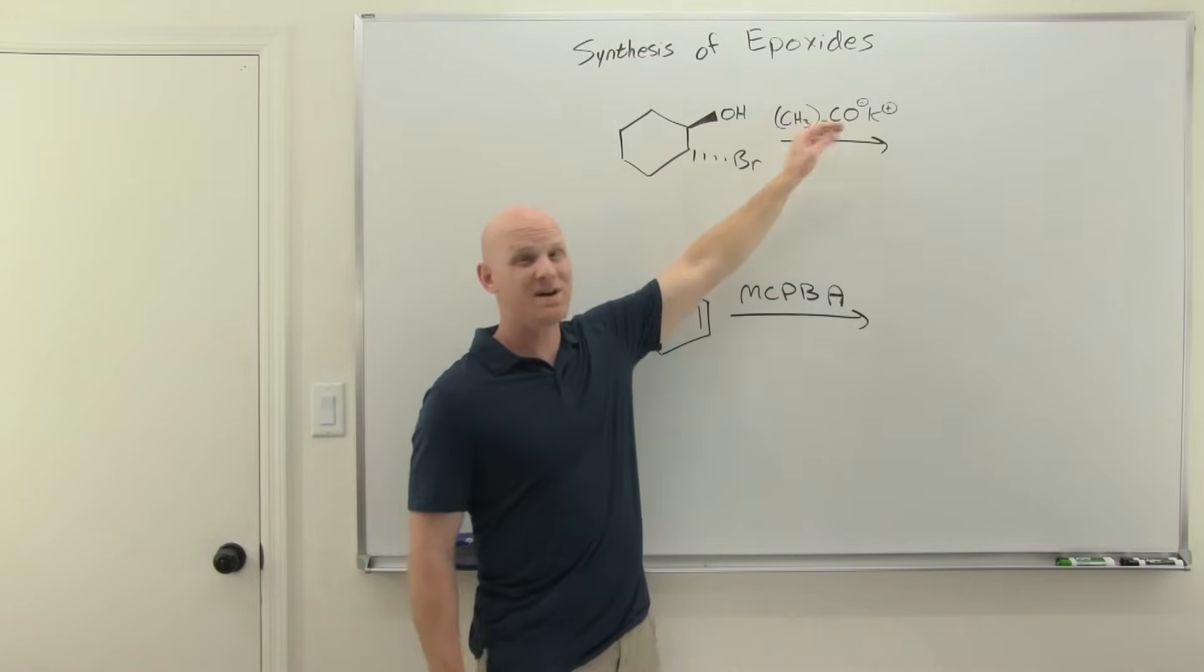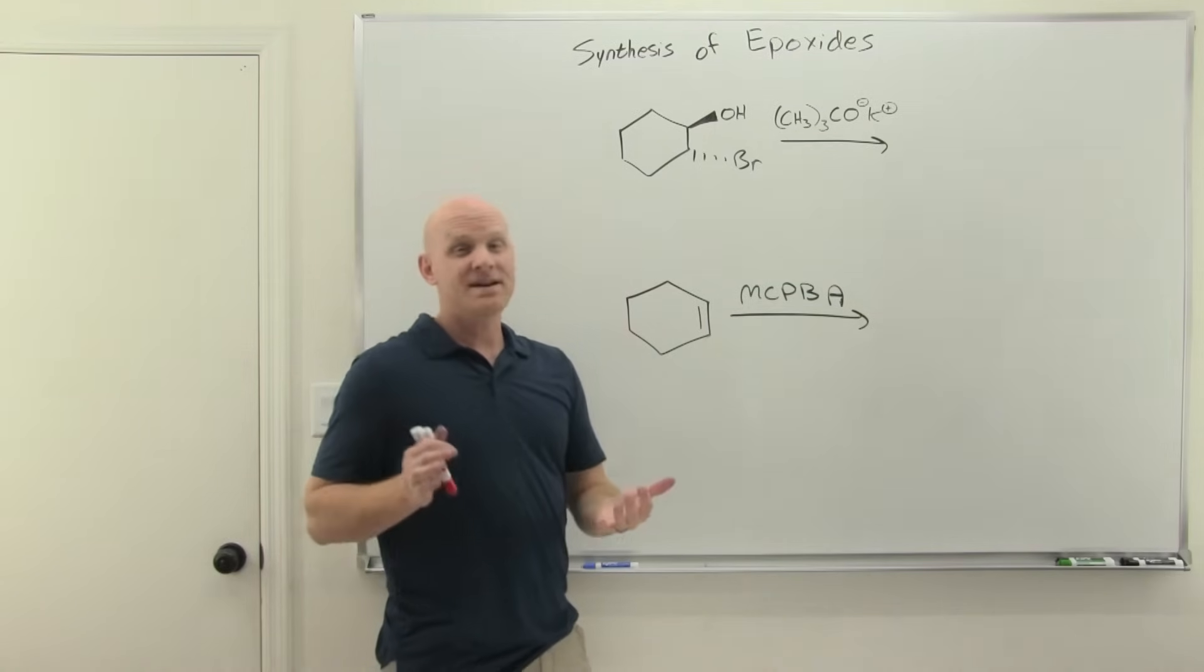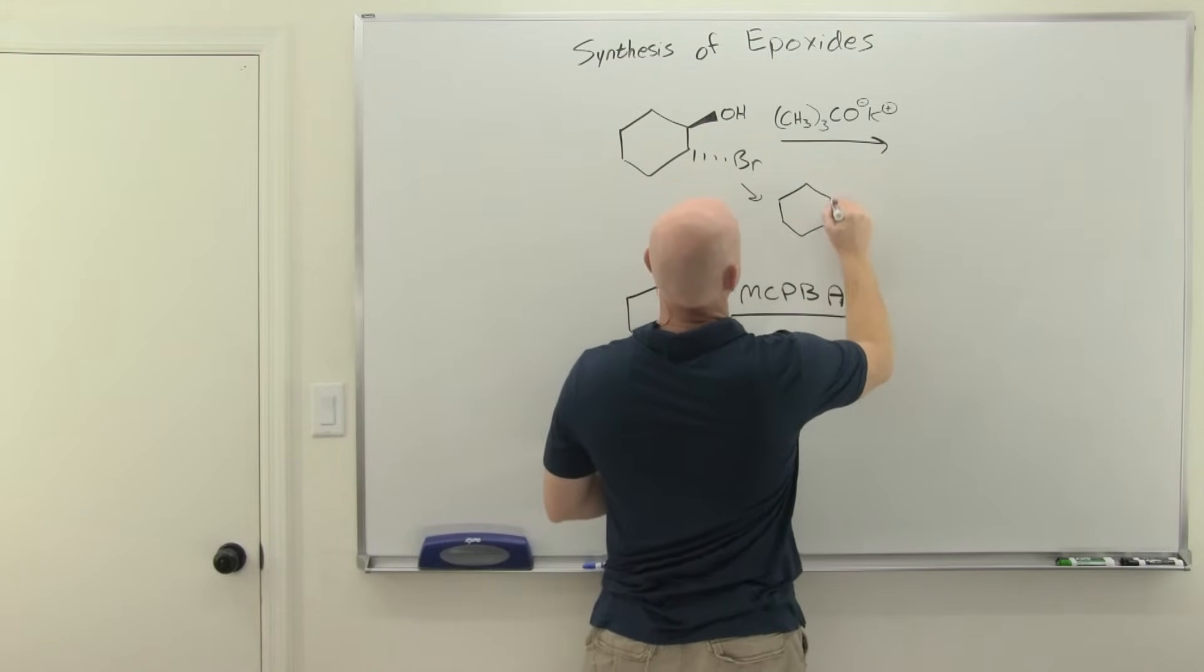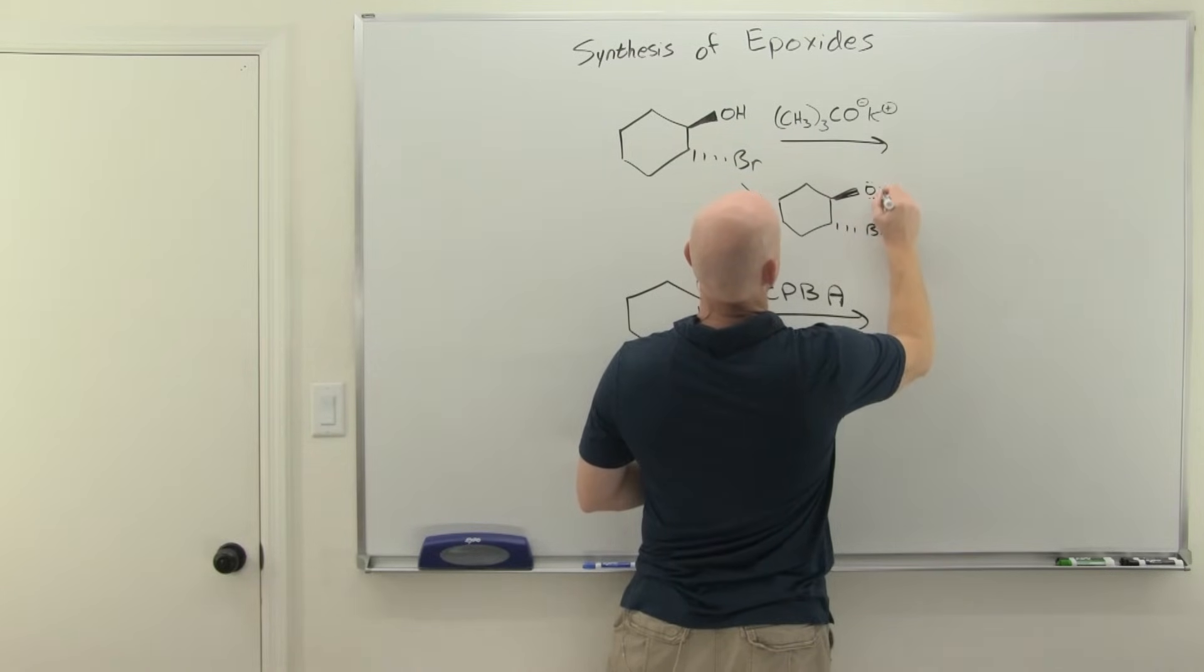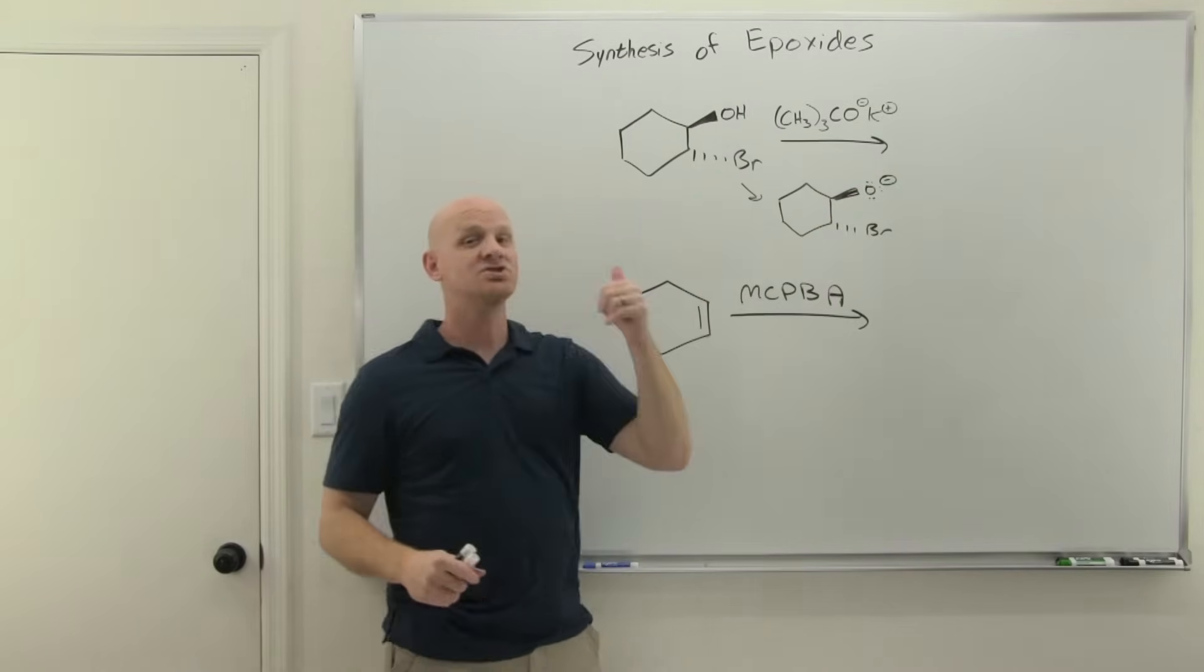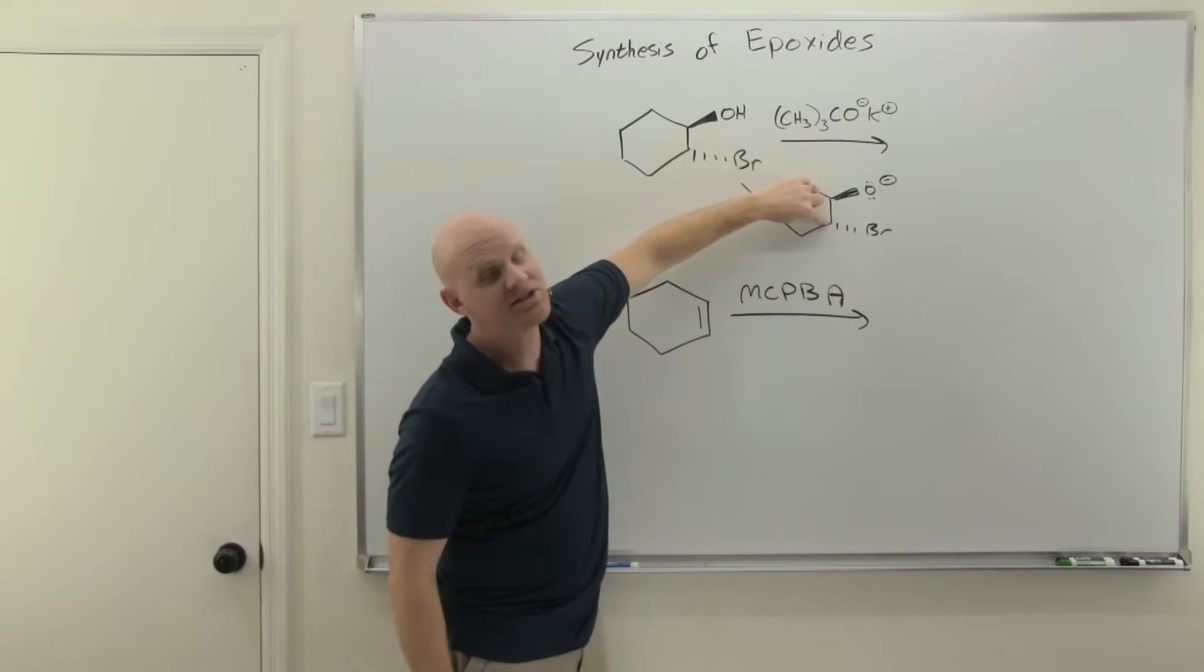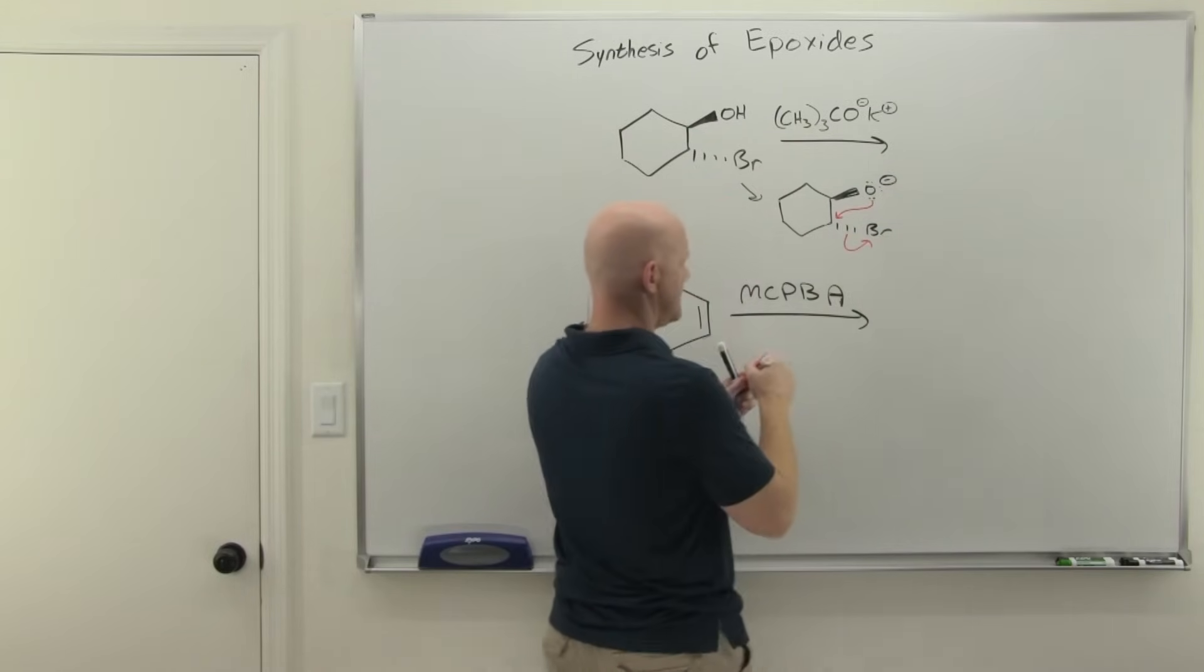So the way this works, you need to add a strong base. A bulky base is quite often used, like potassium t-butoxide, but technically if you use sodium hydroxide it'll work as well. What happens in this case is you're simply going to deprotonate that alcohol, and now you've got the corresponding alkoxide, which is a strong nucleophile. As an alcohol it was a weak nucleophile, now it's a strong nucleophile, and it's already right near the backside of the adjacent carbon here, so it's just going to do backside attack here and kick off the leaving group.